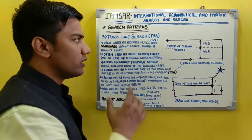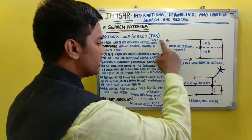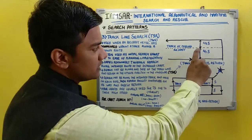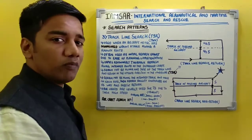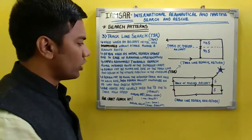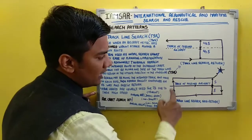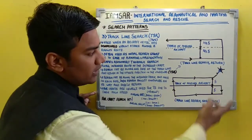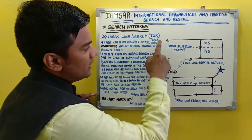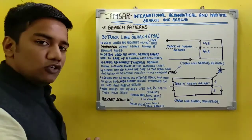We have two search patterns: track line search return and track line search non-return. In track line search return, the search may be along one side of the track line and return in the opposite direction on the other side, with the distance from the track being half a leg on either side. In track line search non-return, the search is carried out along the intended track and the facility continues on its way without returning. They are coded as TSR and TSN respectively.